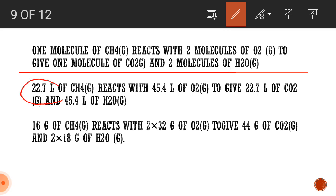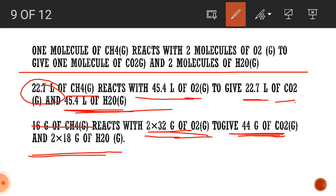For example, if 22.7 liters of methane reacts with 45.4 liters of oxygen, then we will get 22.7 liters of carbon dioxide and 45.4 liters of water. Similarly, if 16 grams of methane reacts with 2 times 32 grams of oxygen, we will get 44 grams of carbon dioxide and 2 times 18 grams of water molecules. We have made these statements mainly by using stoichiometry and stoichiometric calculations.